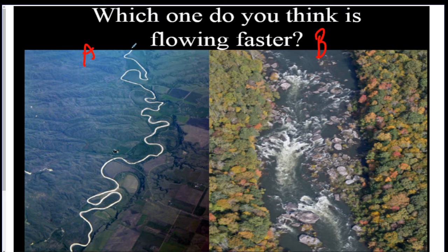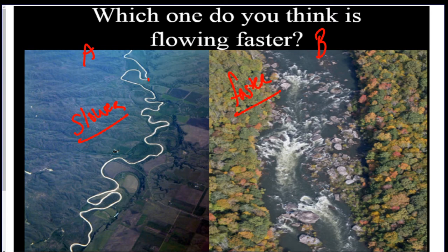If you compare a winding river like A to a straight river like B — river A has a lot of twists and turns. When water has to slow down to make turns, it's a slower moving river, as opposed to a straightaway which is a faster moving river. Like in racing: a straightaway lets you hit the gas, but turns force you to slow down. So A is a slower river and B is a faster river. Generally, if the river has lots of turns, it's older; the older the river, the more turns; the younger the river, the straighter it is.